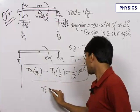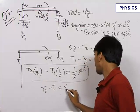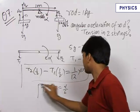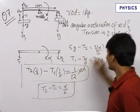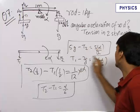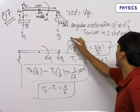So we can write this safely as 1 upon 12 into alpha. So we get T2 minus T1 is equal to alpha by 6. So we get the three equations we needed, 5g minus T2 is equal to 5 alpha by 2.